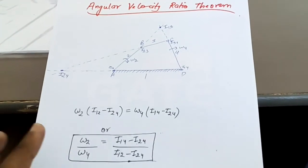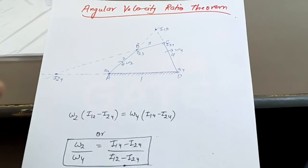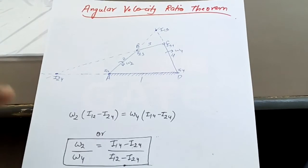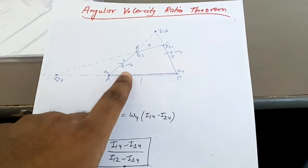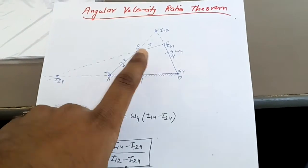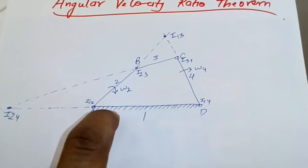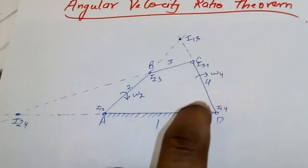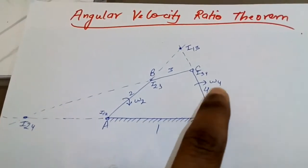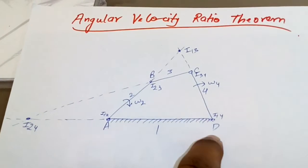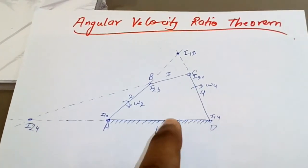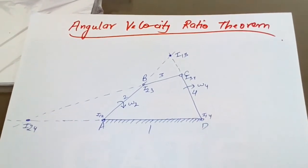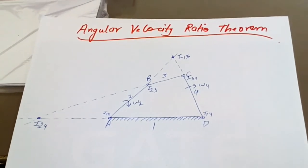Starting with the video — the angular velocity ratio theorem helps us to find the angular velocity of one link if the angular velocity of another link is known. Suppose we generally know the angular velocity of the crank AB. So if we have to find the angular velocity of the output link CD, that is link 4, we can find omega 4 by applying the angular velocity ratio theorem directly, without constructing the velocity diagram.